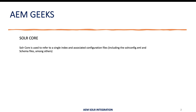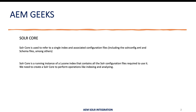Let's understand this in this way. Let's say you have multiple websites running in your Solr, and each website is separate from the others. To maintain the data, index, or configuration for a particular website, you create a core. So you can have multiple cores in your Solr server.